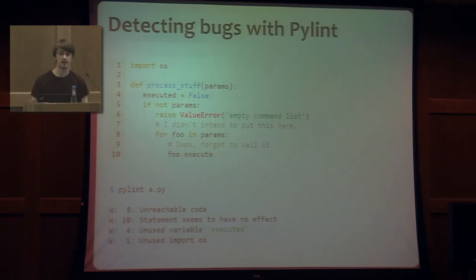So PyLint warns me about this and says, hey, at line eight, you have unreachable code. And that code is dead code, or you need to take a look. And at line 10, that statement doesn't seem to have any effect at all. So I'm not sure what you're doing there, but something is fishy.